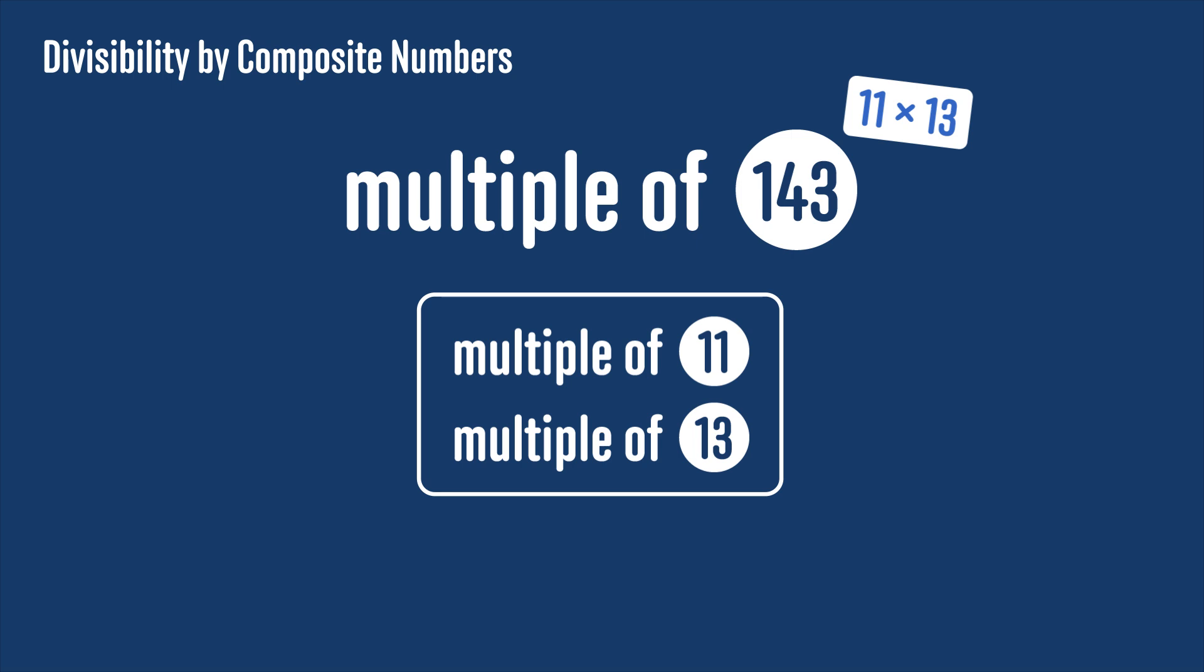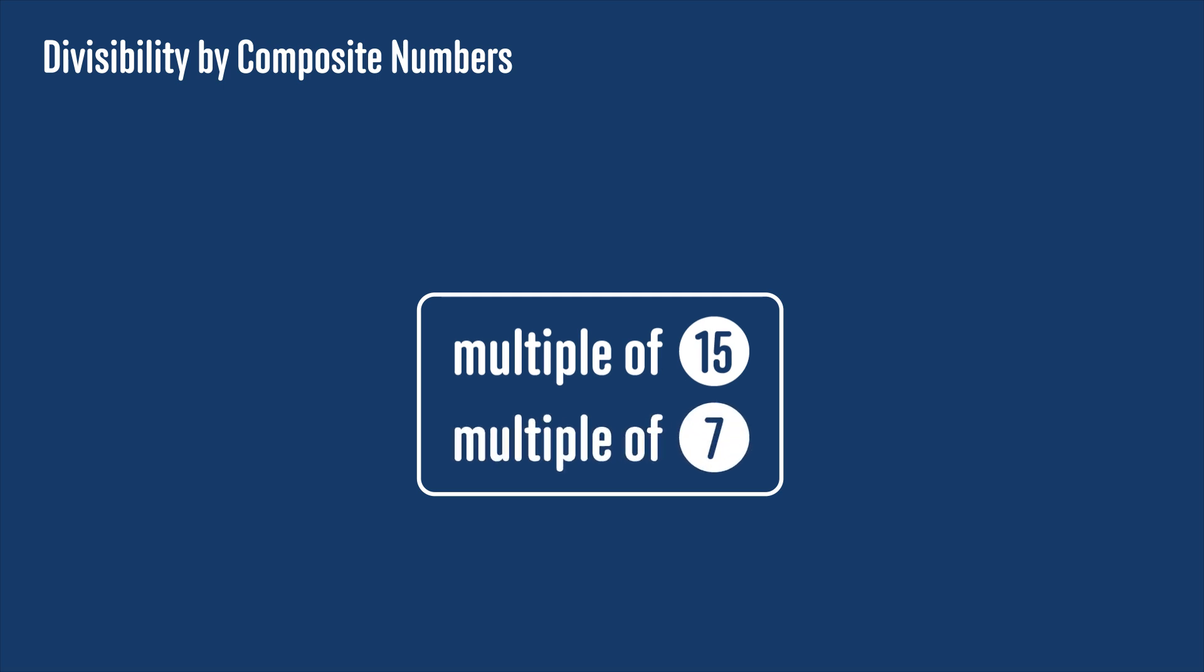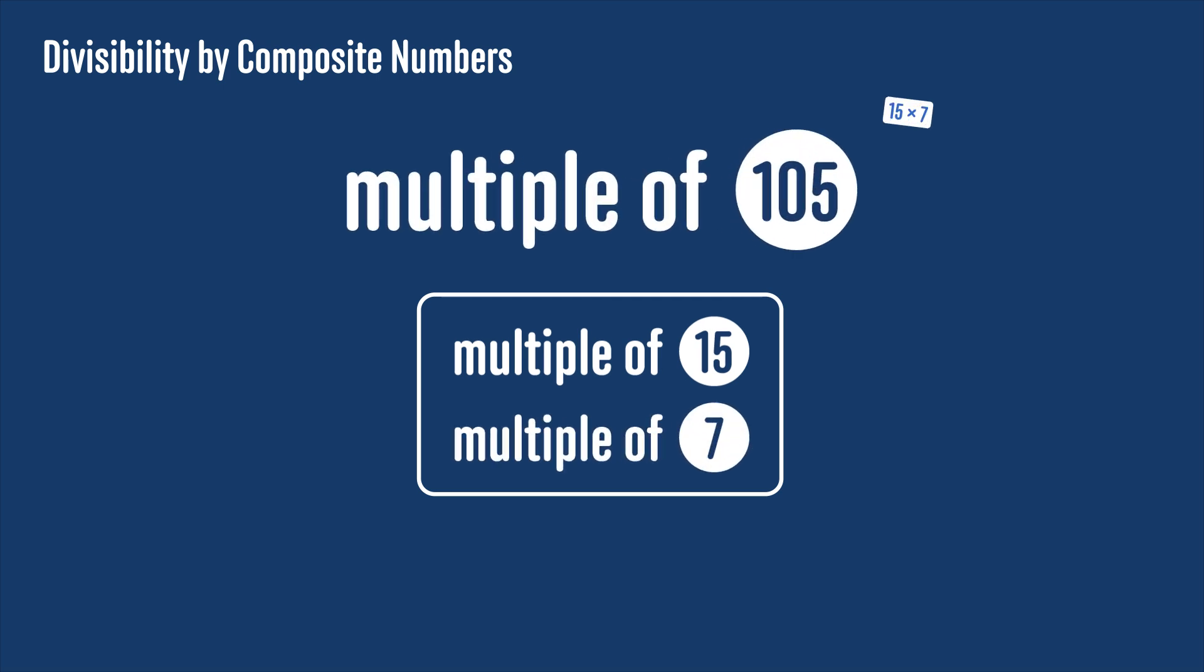Now the numbers don't necessarily have to be prime, they just have to have no factors in common. So again, if you knew a number was a multiple of 15 and a multiple of 7, you could say that the number is definitely a multiple of 105, which is 15 times 7, because 15 is 3 times 5, doesn't have any factors in common with 7. But it's not such a simple rule when the numbers do have a factor in common, so be careful.